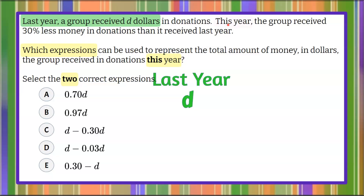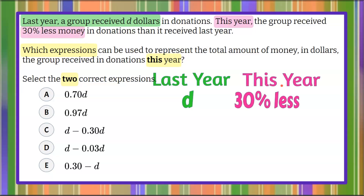Then we have this year, and we know that this year they received 30% less. So this year, 30% less than last year's D. It says less than it received last year, so 30% less of D — they received 30% less of the amount from last year.